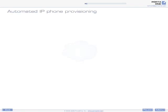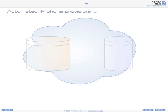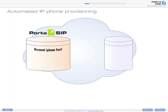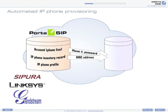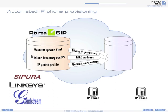Automated IP Phone Provisioning. PortaSIP can serve as an auto-provisioning server for various types of IP phones — Sipura, Linksys, Grandstream, and others. You can create multiple IP phone profiles in PortaSwitch, defining a general set of service parameters for a certain type of device or service. PortaBilling maintains information about every IP phone on your network in its IP phone inventory.